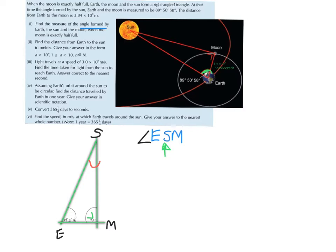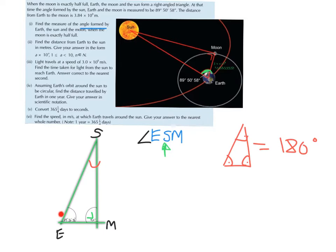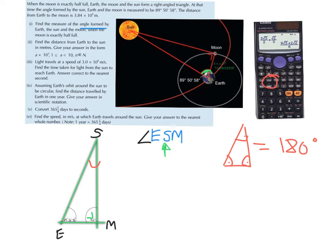We can figure out that angle because we know that all angles in any triangle — equilateral, isosceles, scalene, or right angle — must add up to 180 degrees. We have 90 degrees and 89 degrees 50 minutes and 58 seconds, which is really close to 180, so the remaining angle will be quite small. Let's add those two up and subtract from 180 using the DMS button on our calculators. Click in 89, then DMS, 50 minutes, DMS, 58 seconds, DMS, plus 90.